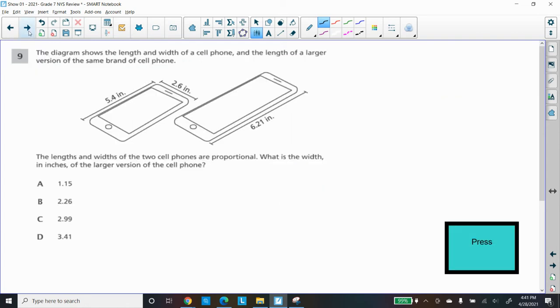Let's go on and see what else we got. This is question number nine from 2019 test. Grade Seven. The diagram shows the length and width of a cell phone. The length of the larger cell phone is the same version. So you got two cell phones here and you got lengths and width.